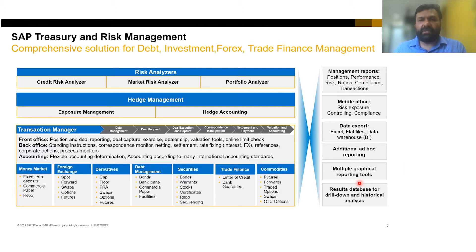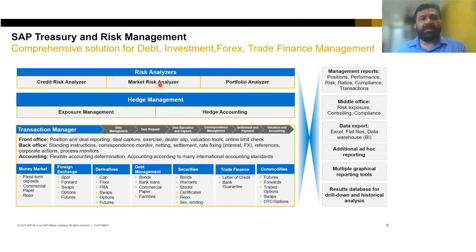On the right-hand side you see various reporting capabilities — positions, performance, risk ratios, compliance, mid-office, risk exposure, and controlling and compliance. You can export data into external systems such as a Business Warehouse for additional or ad hoc reporting. The risk analyzers allow you to analyze the treasury portfolio, including the credit risk analyzer for exposure limit monitoring, and the market risk analyzer to do mark-to-market, net present value calculations, and the portfolio analyzer to analyze the overall portfolio.